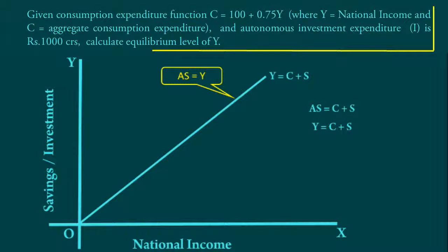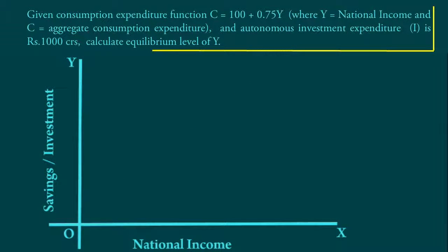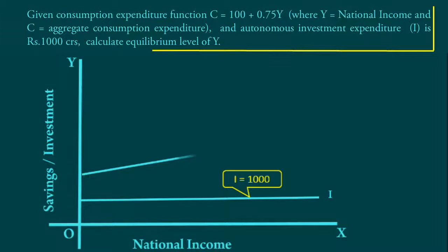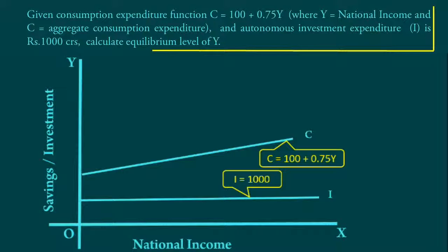We shall now turn to the demand side. I is the Investment Curve. Investment Function is I = 1000. C is the Consumption Curve. Consumption Function is C = 100 + 0.75Y.